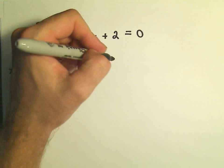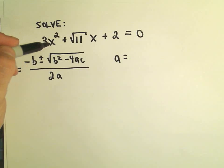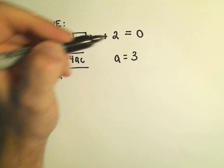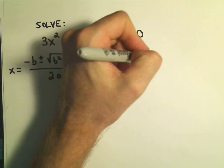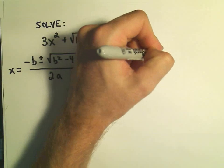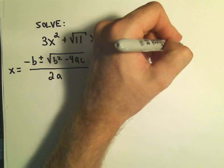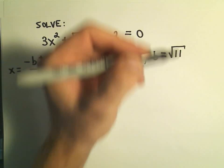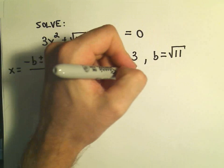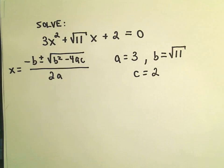So a is the coefficient on the x squared, so our a value will be positive 3. Our b value is the coefficient on the x, which will be, in this case, the square root of 11. And then our c value, in this case, is going to be equal to positive 2.